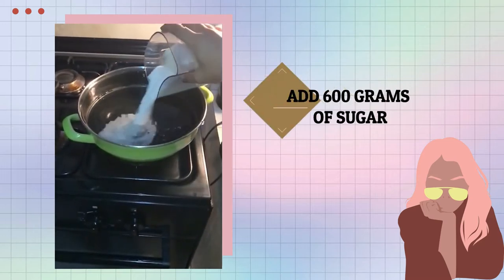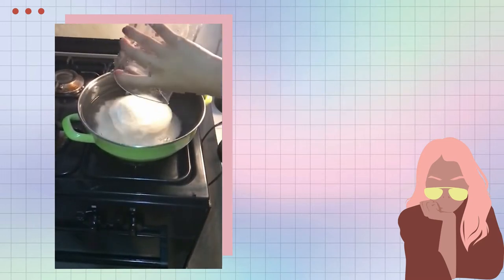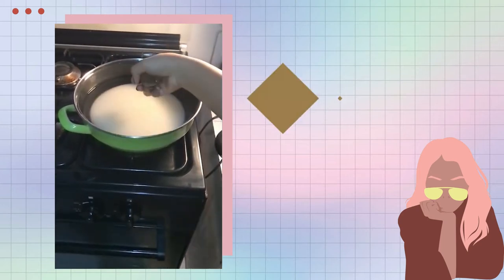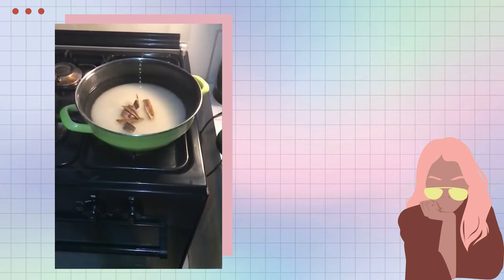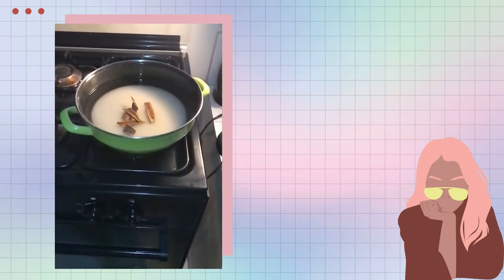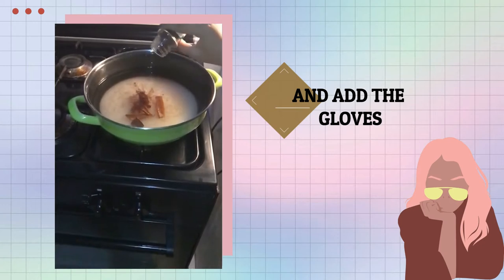Add 600 grams of sugar, 5 cinnamon sticks, and cloves to the boiling water to make the sugar syrup.